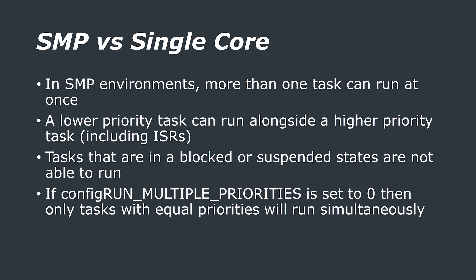However, one thing that might catch you out is that the assumption that no tasks run while an ISR is executing is also no longer valid. If data is shared between an ISR and tasks, you need to ensure proper mutual exclusion. There is a way to partially disable this behaviour: in FreeRTOSConfig.h you can set configRunMultiplePriorities to 0, which disables tasks of different priorities running at the same time, so only same-priority tasks run truly concurrently. This can be helpful when porting single-core code to SMP with minimal changes.